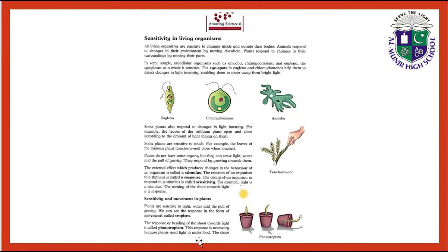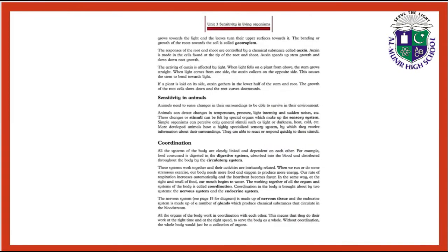Phototropism is very important because plants need light to make food through the photosynthesis process. The shoot grows towards the light and the leaves turn their upper surface towards it. The bending and growth of the roots towards the soil is called geotropism.